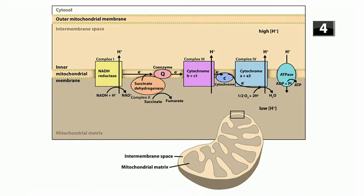Complex I is an NADH reductase — it converts NADH into NAD+ plus an electron. For every mole of NADH you put in, you can generate 2.5 moles of ATP. Complex II is succinate dehydrogenase, which requires coenzyme Q, and is where FADH2 is fed into the electron transport chain. For every mole of FADH2 you put in, you get out 1.5 moles of ATP.